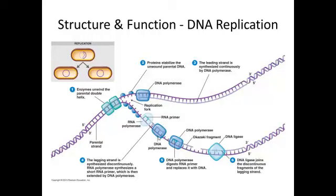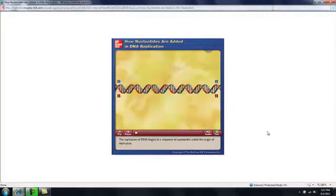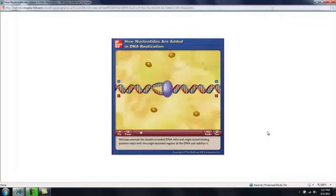Now I'm going to show you an animation. And, in the interest of making sure that copyrights are kept to, I got it from McGraw-Hill. And this is the website where you can go to, and here comes the animation. The replication of DNA begins at a sequence of nucleotides called the origin of replication. Helicase unwinds the double-stranded DNA helix, and single-strand binding proteins react with the single-stranded regions of the DNA and stabilize it.